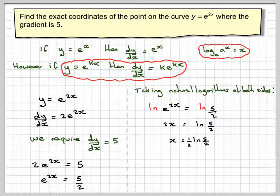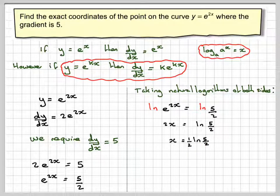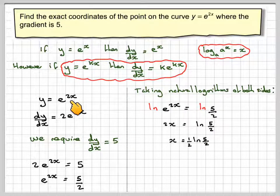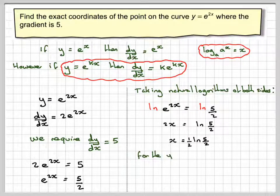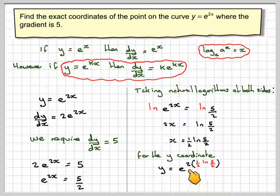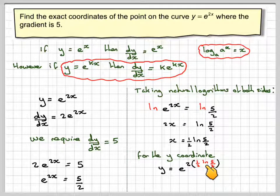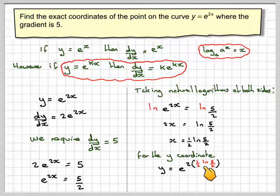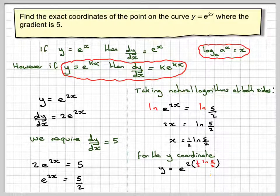We want the exact coordinates, so we're not allowed to use our calculator. Right, now we take that value of x, we substitute it back in here to get my value of y. So for the y-coordinate, we get y is equal to e to the 2 times my value of x, which is a half ln of 5 over 2. These twos will cancel out, and we just get e to the ln of 5 over 2.